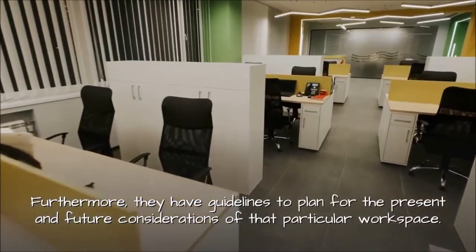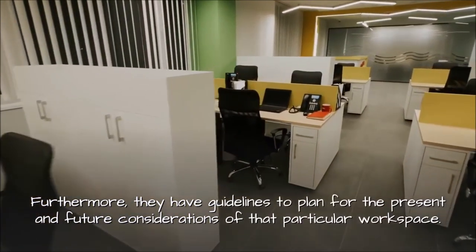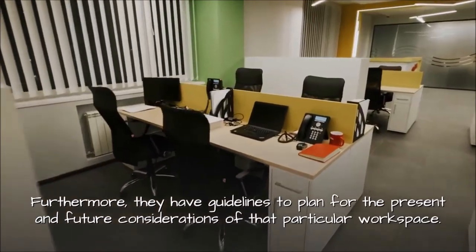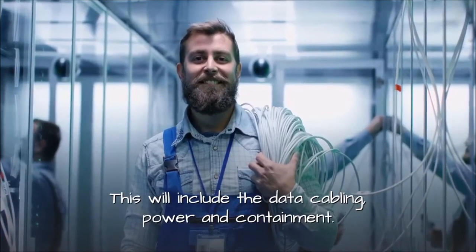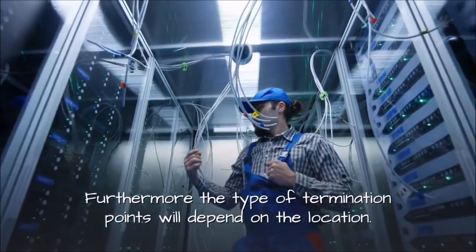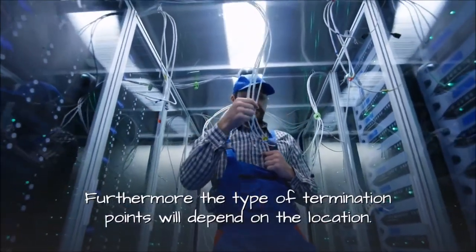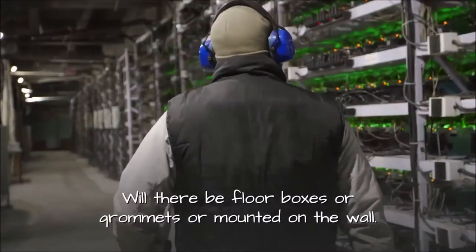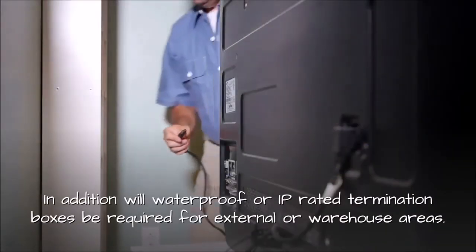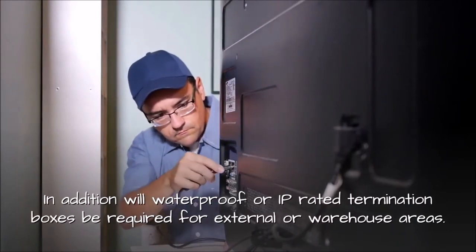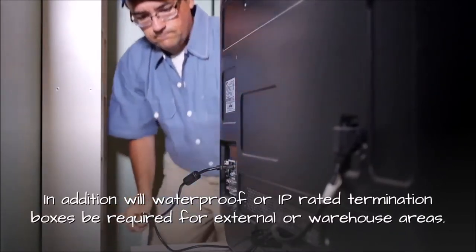Furthermore, they have guidelines to plan for the present and future considerations of that particular workspace. This will include the data cabling, power and containment. Furthermore, the type of termination points will depend on the location. Will there be floor boxes or grommets or mounted on the wall? In addition will waterproof or IP rated termination boxes be required for external or warehouse areas.